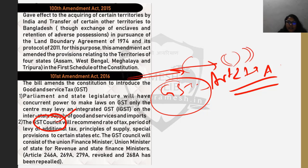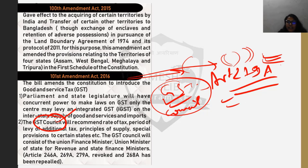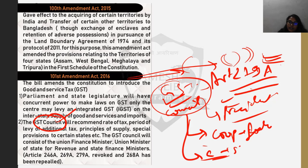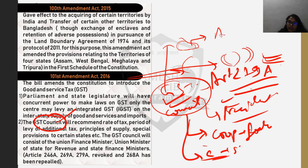As homework, you should find out which articles were amended, inserted, or deleted via the 101st Amendment Act. The GST Council is mentioned in Article 279A, where the President is supposed to form it. The GST Council is based on the principles of cooperative federalism, having both center and state representatives. The chairperson is the Union Minister of Finance, currently Nirmala Sitharaman, and the vice chairperson is the Minister of State for Finance.